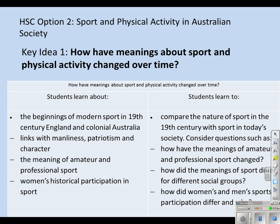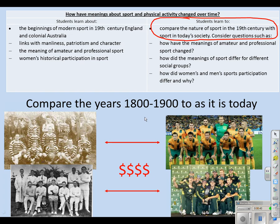We're starting off with dot point 1. In all of these recordings I'm going to focus on the right hand side of the syllabus, with a focus on the actual questions it asks of you. This dot point starts with a big question: compare the nature of sport in the 19th century with sport in today's society. Just by looking at these photos you'll pick up pretty quickly that the biggest change in sport today has been the dollars that have come into sport. Sport has become a big business — that has been the biggest change from sport in the 19th century to sport today.